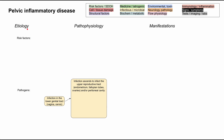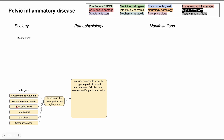Now let's get into the etiology of pelvic inflammatory disease. We can break it down into risk factors for the ascending infection, as well as pathogens that cause the lower genital tract infection to begin with. By far the most common are chlamydia and gonorrhea — Chlamydia trachomatis and Neisseria gonorrhoeae. Other bugs that can be involved include E. coli, Ureaplasma, Mycoplasma, and other anaerobes, but these are much less common, and if you do see these, you should consider co-infections with chlamydia and gonorrhea.